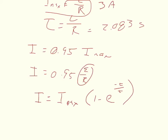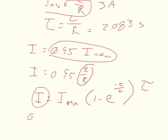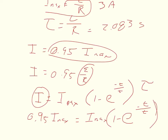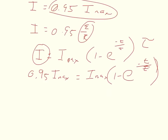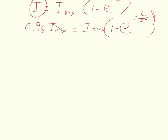Substituting I = 0.95·I_max into the RL equation gives: 0.95·I_max = I_max · (1 - e^(-t/τ)). The I_max terms cancel when you divide both sides by I_max, leaving: 0.95 = 1 - e^(-t/τ).